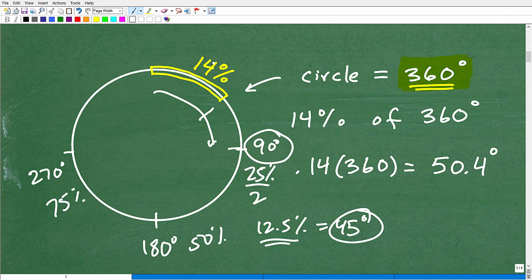All right, so let's go ahead and actually do this now using the correct math. So 14% of 360, how do we take a percent of anything? Well, you take that percent and you turn it into a decimal. So we're going to write 14% as a decimal. That's 0.14.